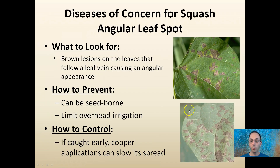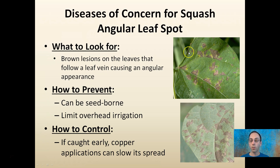Angular leaf spot — as you see here in these images — produces brown lesions on the leaf that follow the leaf vein, causing that angular look to occur. This can be seed-borne, but it's also spread by overhead irrigation. If you catch it early, copper applications can slow its spread and progression.